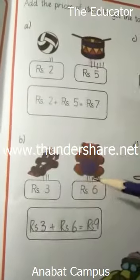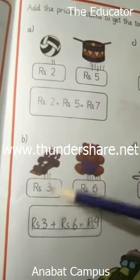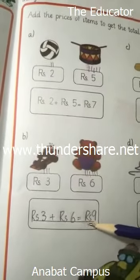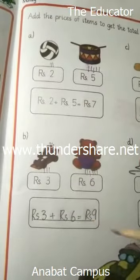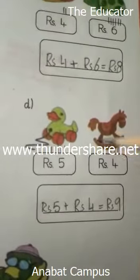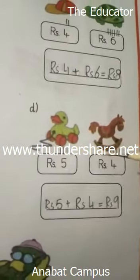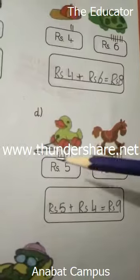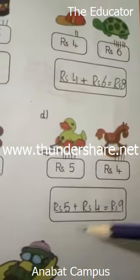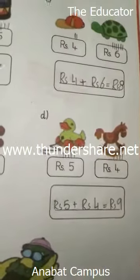6 lines yahan draw ki — 6 and 3. Rupees 3 plus rupees 6 is equal to rupees 9. Hum ne yahan 4 lines draw ki aur yahan 9. In ko total kiya to, counting 5, 6, 7, 8, 9. Rupees 5 plus 4 is equal to rupees 9.